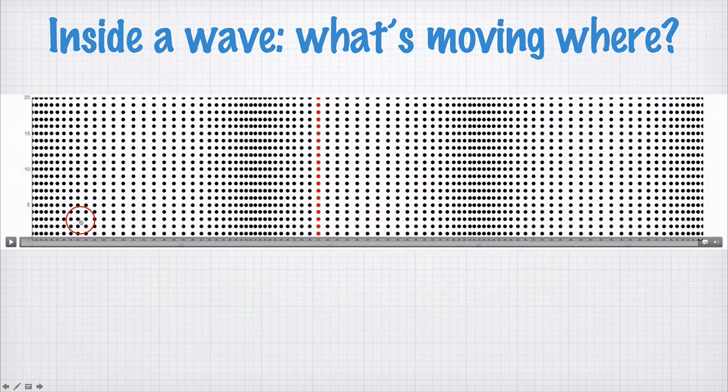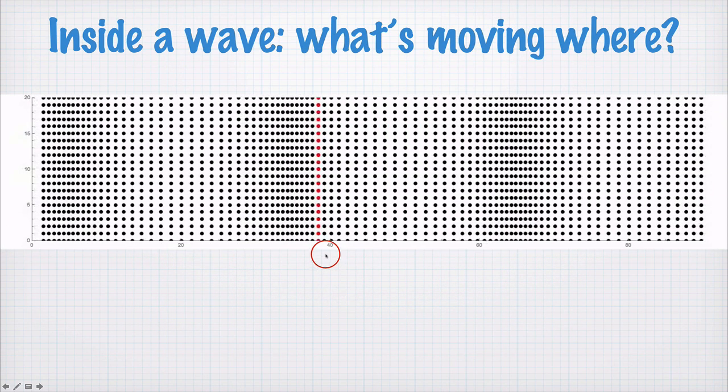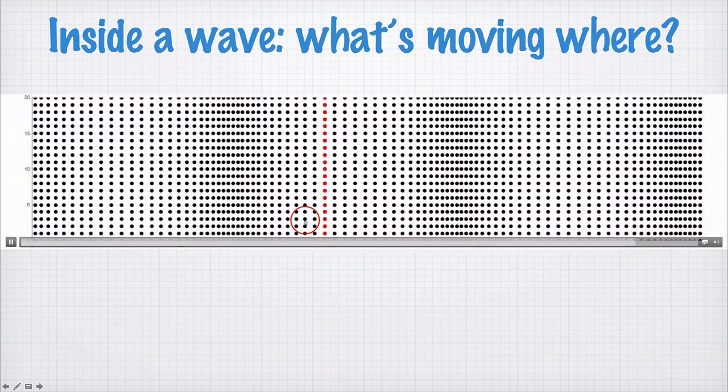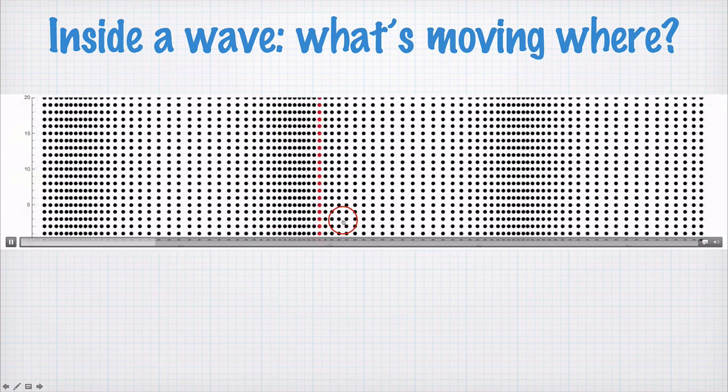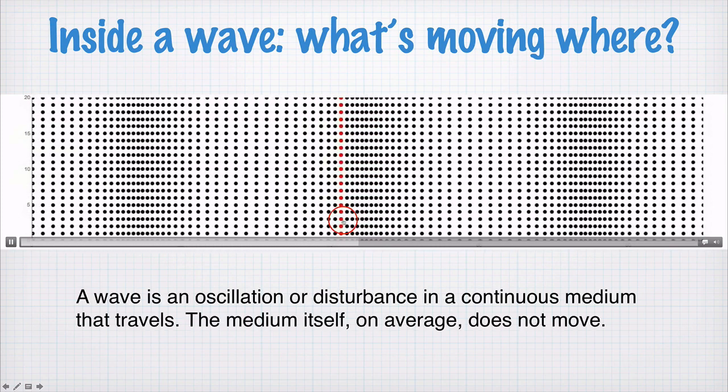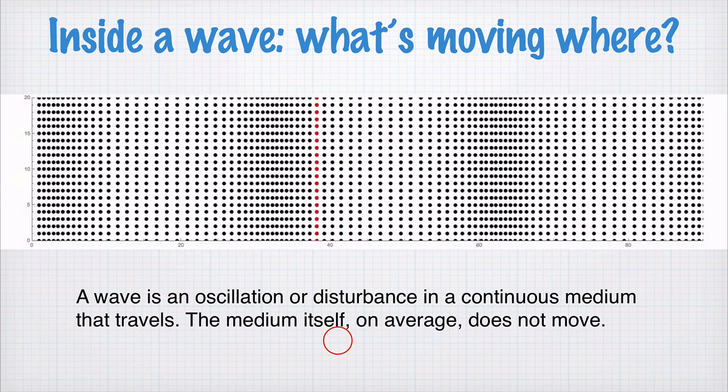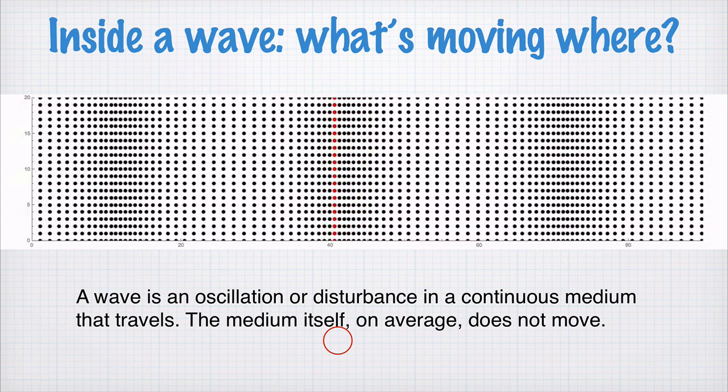In the case of a longitudinal wave, again we can track some particles, this red line of particles here, and we can see it oscillates backwards and forwards, but on average it doesn't move. So what we can say is that the wave is an oscillation or a disturbance in a continuous medium that travels, but the medium itself on average does not move.